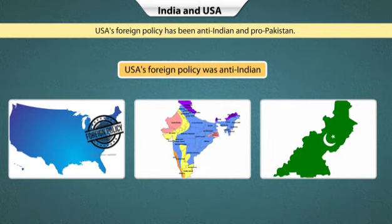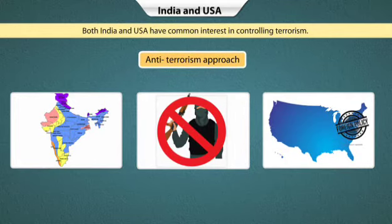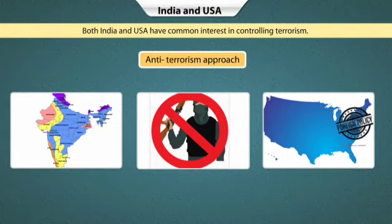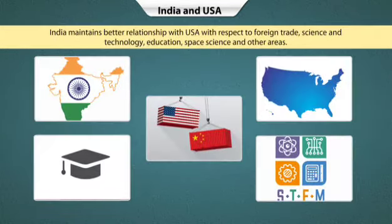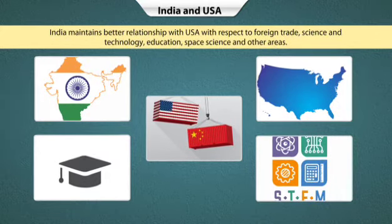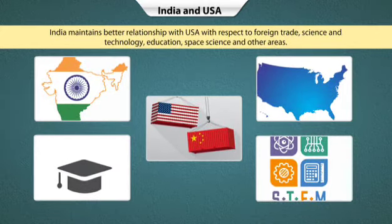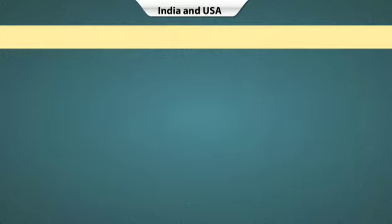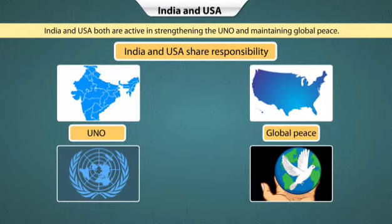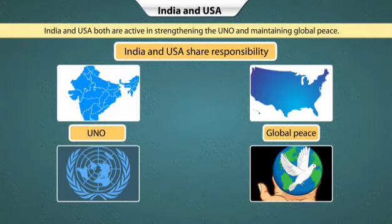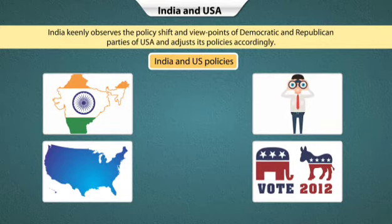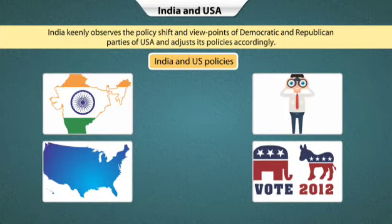However, it is interesting to note that both India and USA have a common interest in controlling terrorism. India maintains a better relationship with USA in areas of foreign trade, science and technology, education, space science and other areas. India and USA both are active in strengthening the UNO and maintaining global peace. India keenly observes the policy shifts and viewpoints of the Democratic and Republican parties of USA and adjusts its policies accordingly.